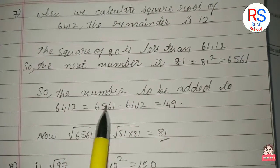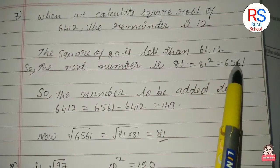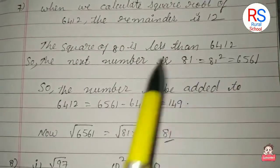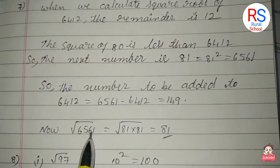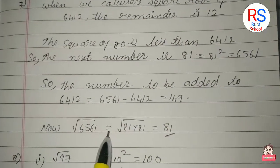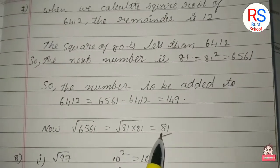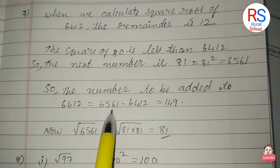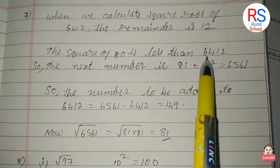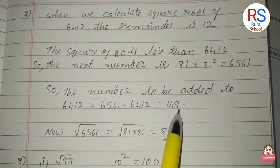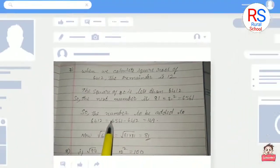So the next number is 81. 81² = 6,561. So the number to be added is 6,561 - 6,412 = 149. The smallest number to be added is 149. That is the perfect square.